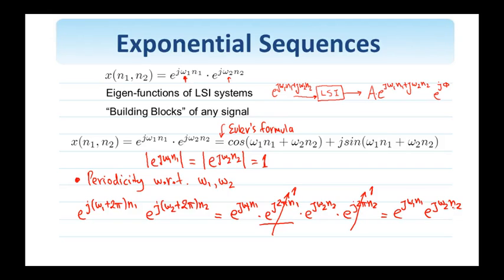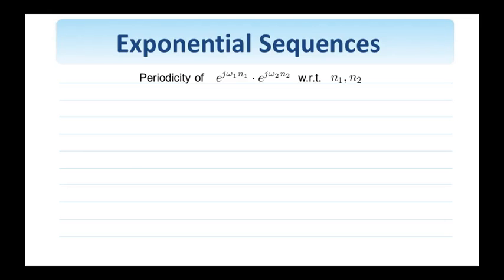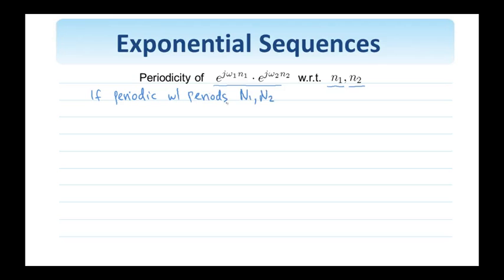This same property — everything just mentioned with respect to the two-dimensional complex exponential — holds true for the one-dimensional, three-dimensional, or multidimensional complex exponential in general. Let us look now at the periodicity of this two-dimensional complex exponential with respect to the spatial coordinates n1 and n2. The question is: is the complex exponential always periodic with respect to n1 and n2? If it were periodic with periods capital N1 and capital N2, then substituting n1 plus capital N1 and n2 plus capital N2 should yield the same result.